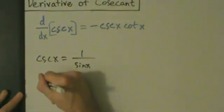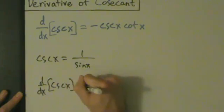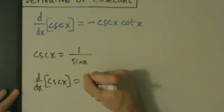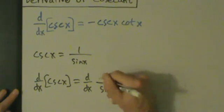Okay, so d/dx of cosecant of x equals d/dx of 1 over sine of x.